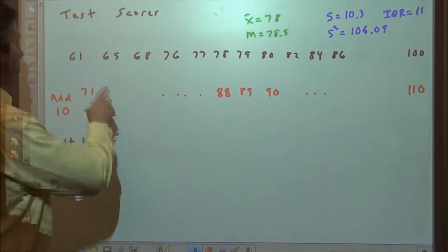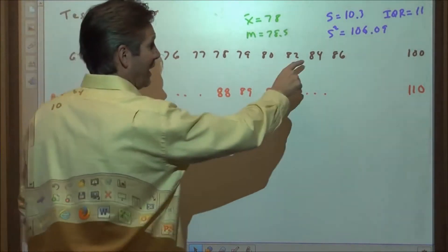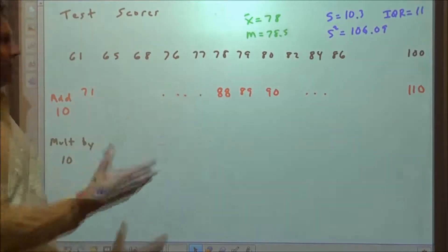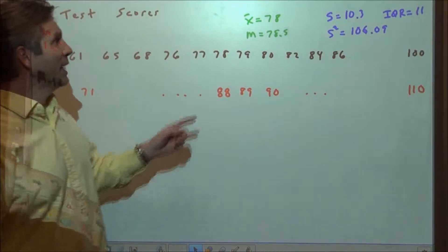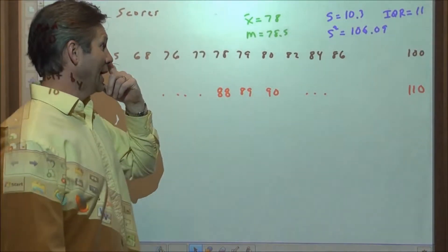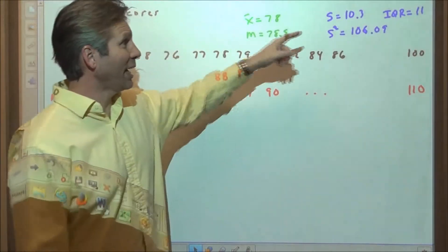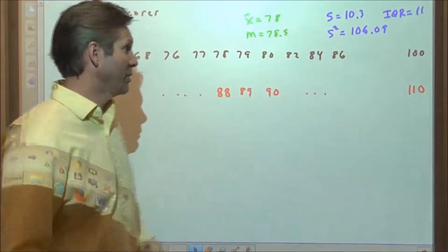So we had people in the 60s, 70s, 80s. Let's suppose the mean average in this class was 78, the median was 78.5, standard deviation 10.3, etc.